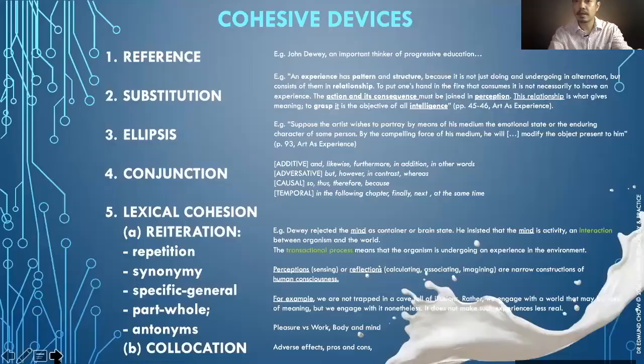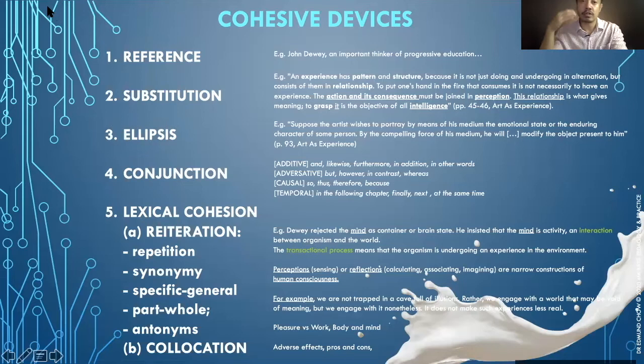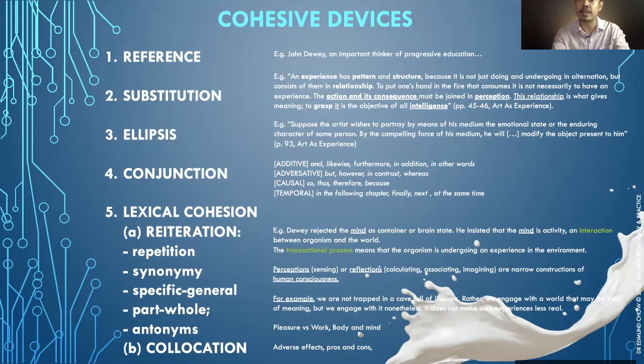Let's go through some cohesive devices in academic writing, with examples from John Dewey. There are about five different types of cohesive devices that linguists have talked about: reference, substitution, ellipsis, conjunction, and lexical cohesion — which includes reiteration and collocation. I'm going to give an example of each.